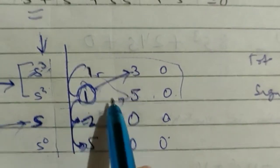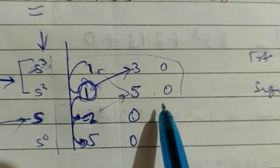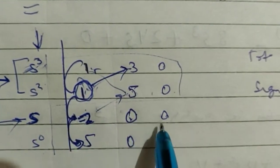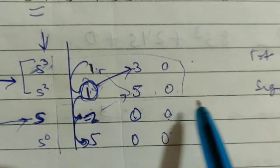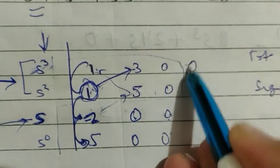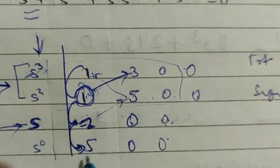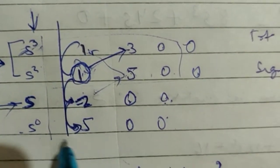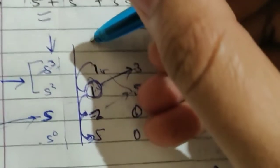Write all terms column-wise: s^3, s^2, s^1, s^0. Since the highest power s^3 is odd, fill the first row with odd-power coefficients, and the second row with even-power coefficients.